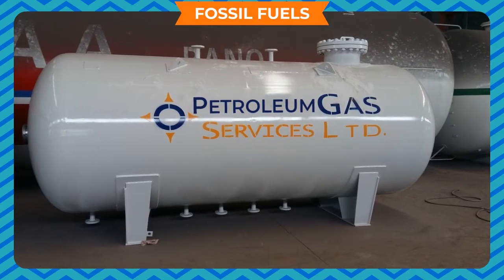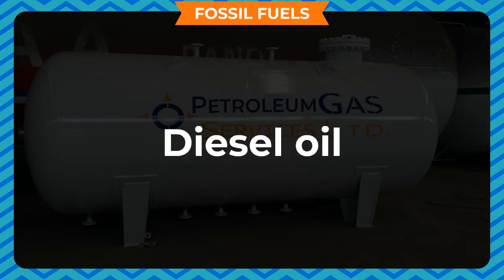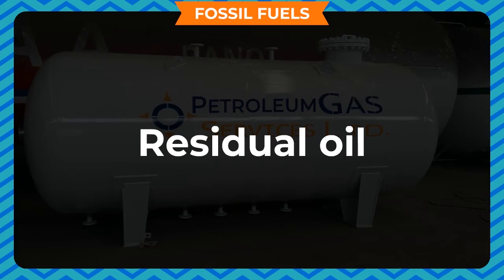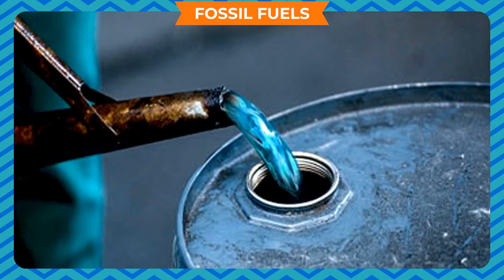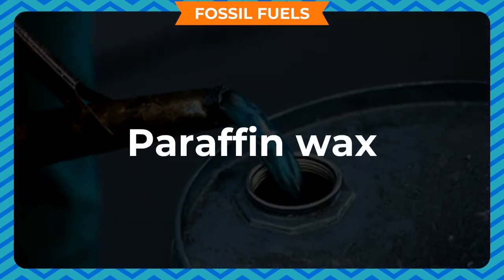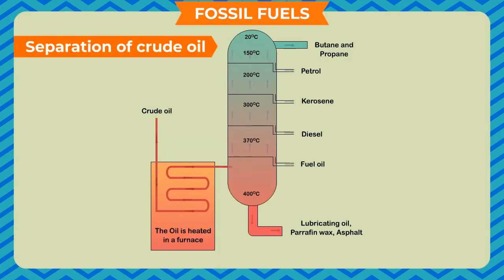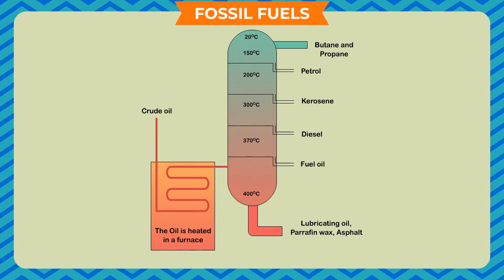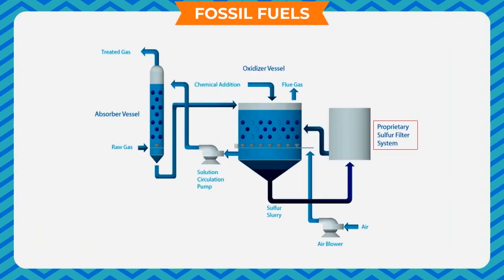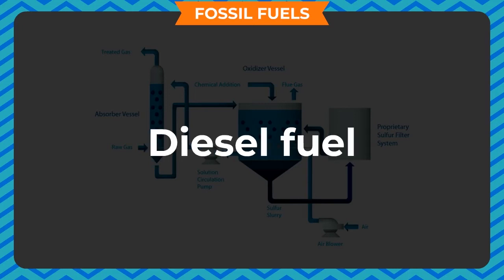Various products obtained from fractional distillation include petroleum gas, gasoline, kerosene oil, diesel oil, fuel oil and residual oil. On further fractional distillation of residual oil, the products obtained are lubricating oil, paraffin wax, asphalt and petroleum coke. Refineries also perform the function of purifying or removing contaminants from the oil. Sulfur is removed from gasoline in a refinery to make it less polluting. Various products obtained from crude oil are propane, ethane, gasoline, kerosene, diesel fuel and asphalt.